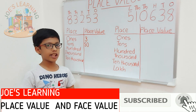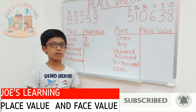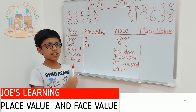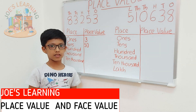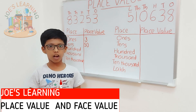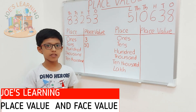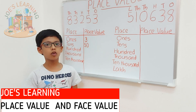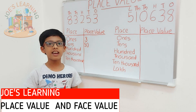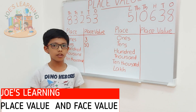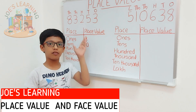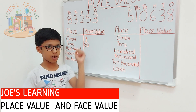Now, let's take a look at the hundreds place. 2 is in the hundreds place. So, we have to multiply it by 100 because it is in the hundreds place. So, 2 multiplied by 100 is 200. So, 200 is the place value of 2 in this number.